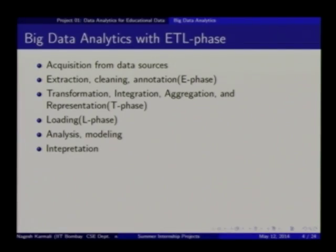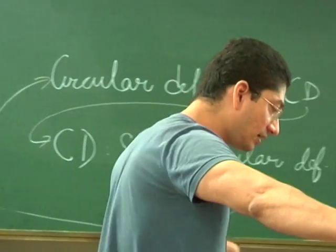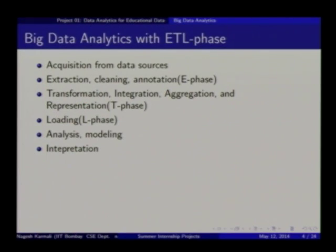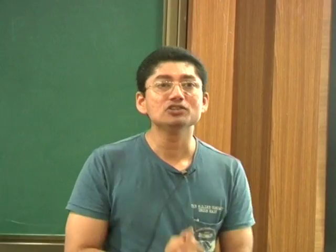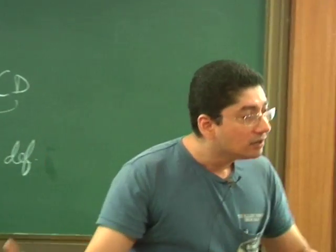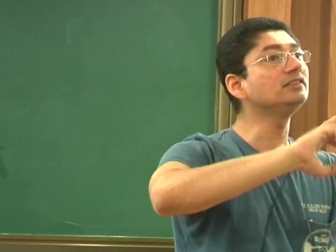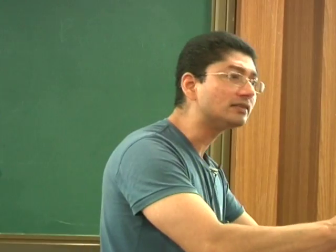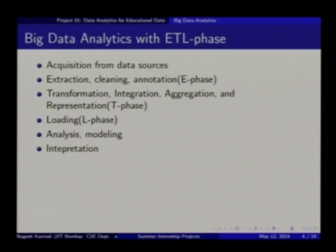Then there is a transformation phase. You need to transform data into different forms because you have structured data here and unstructured there. If you want everything structured, you need to do something — that is transformation. Aggregation, integration — you may want to integrate one set of structured data with semi-structured or unstructured information, put it all in one place, and that is exactly what gets loaded finally.